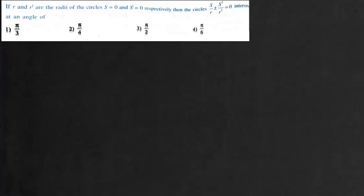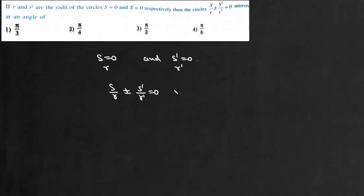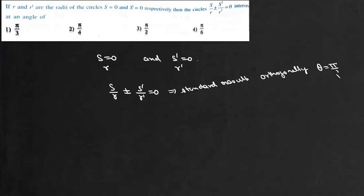The question is: if R and R' are radii of circles S = 0 and S' = 0, we have two circles with radii R and R' respectively, and we are given two circles S/R ± S'/R' = 0. We need to find the angle between these two circles at their point of intersection. This is a standard result — these two circles intersect orthogonally, meaning the angle between them is π/2, so the answer is option 3.